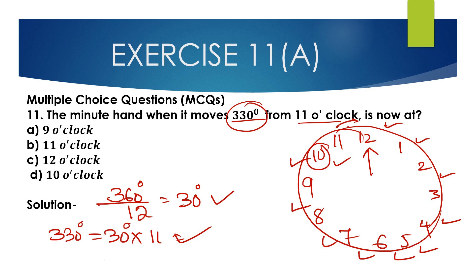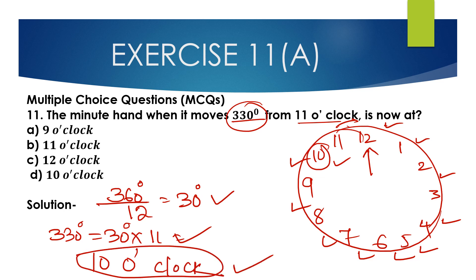So the answer is 10 o'clock. The minute hand, when it moves 330 degrees from 11 o'clock, is now at 10 o'clock. So option D is the correct option.